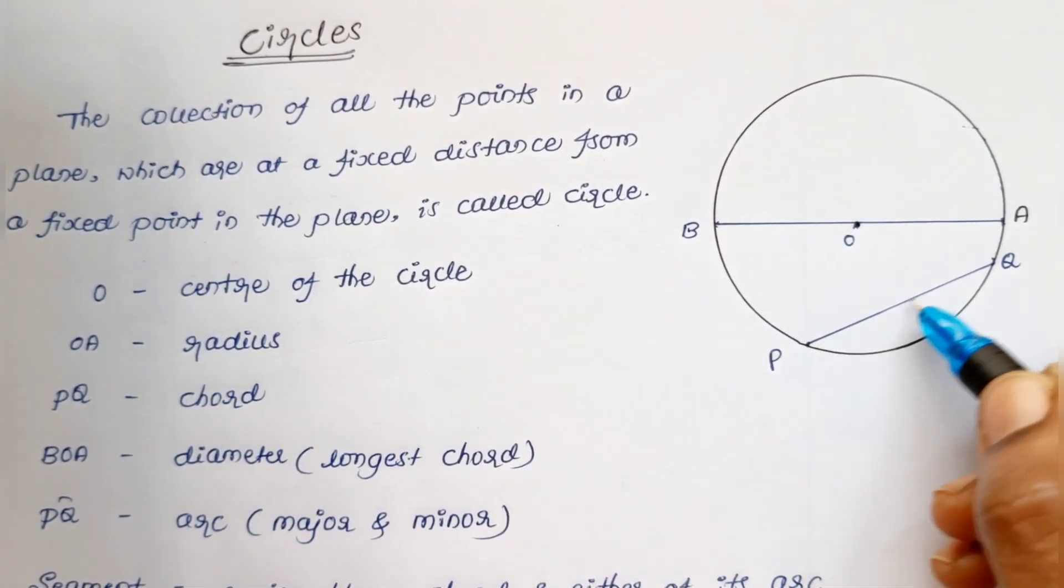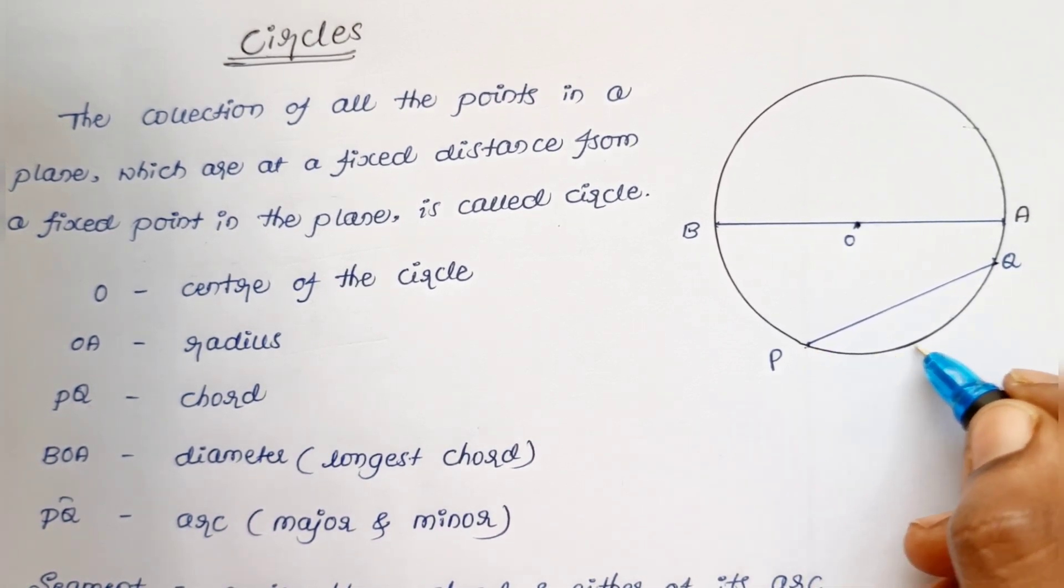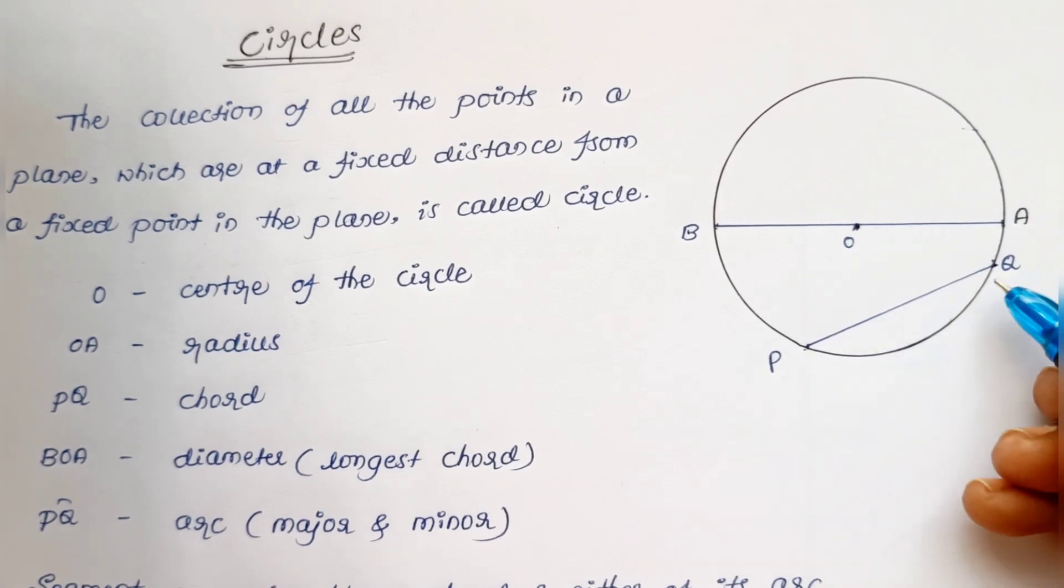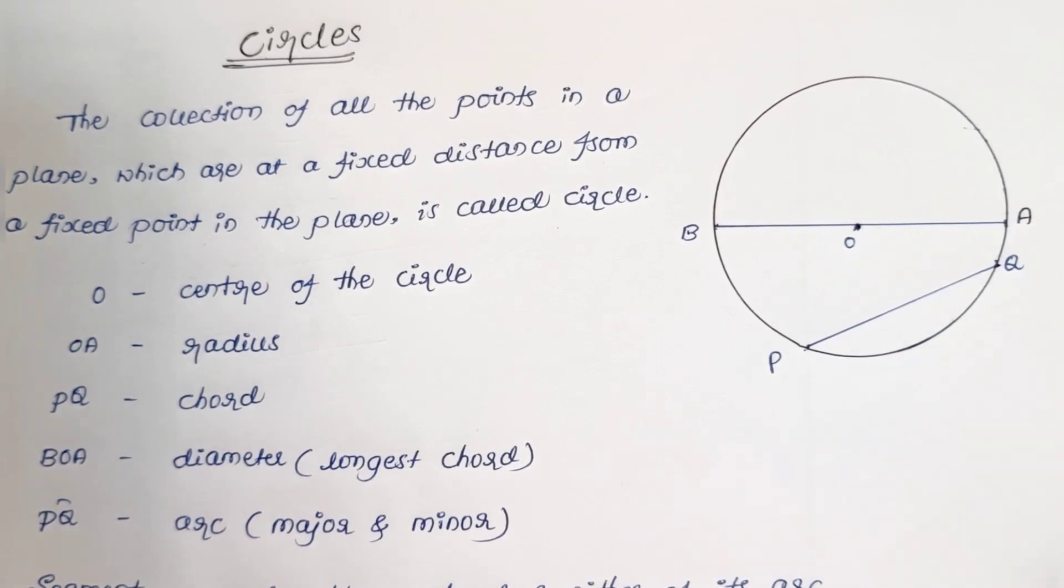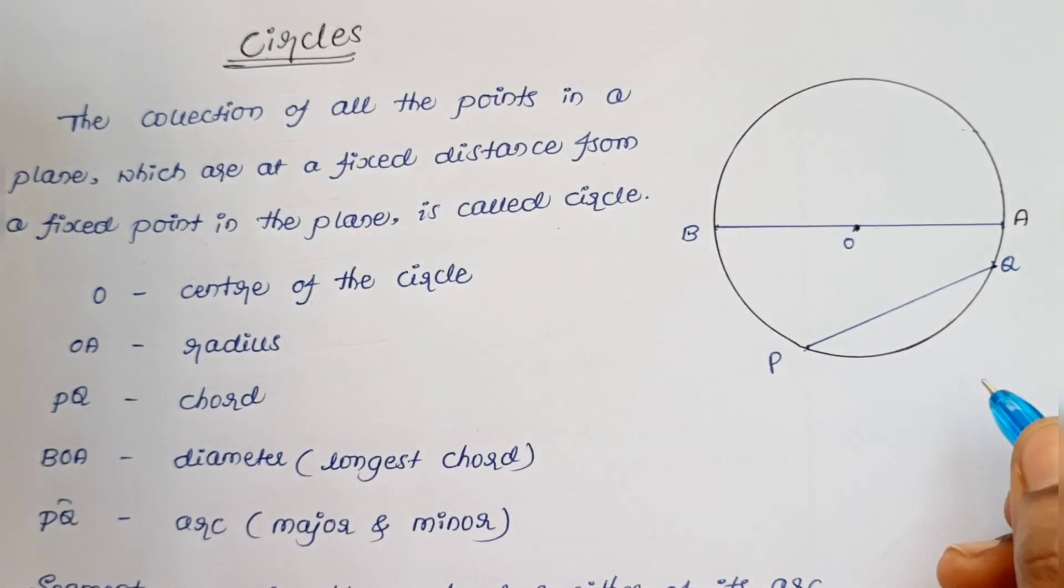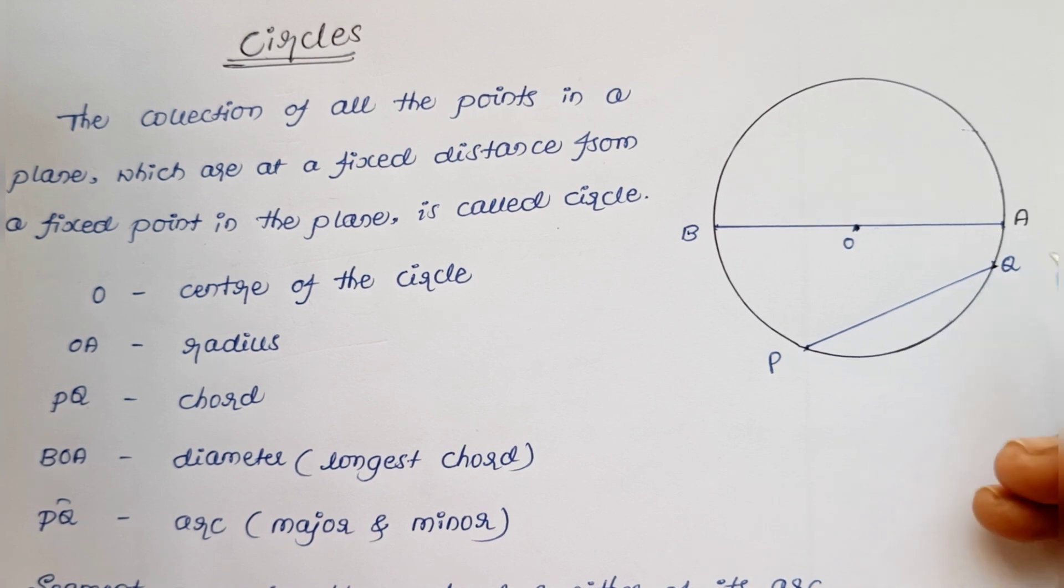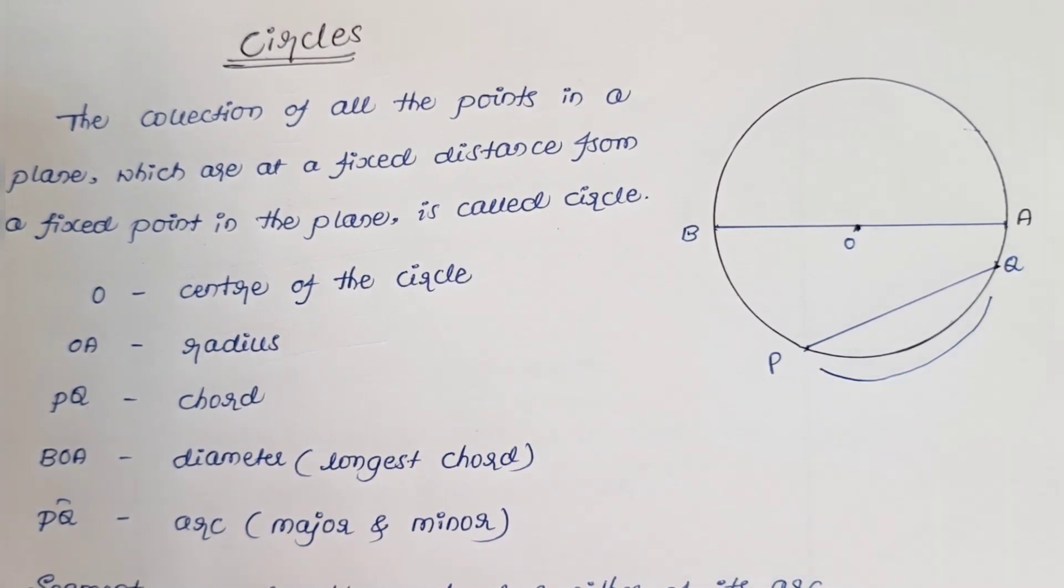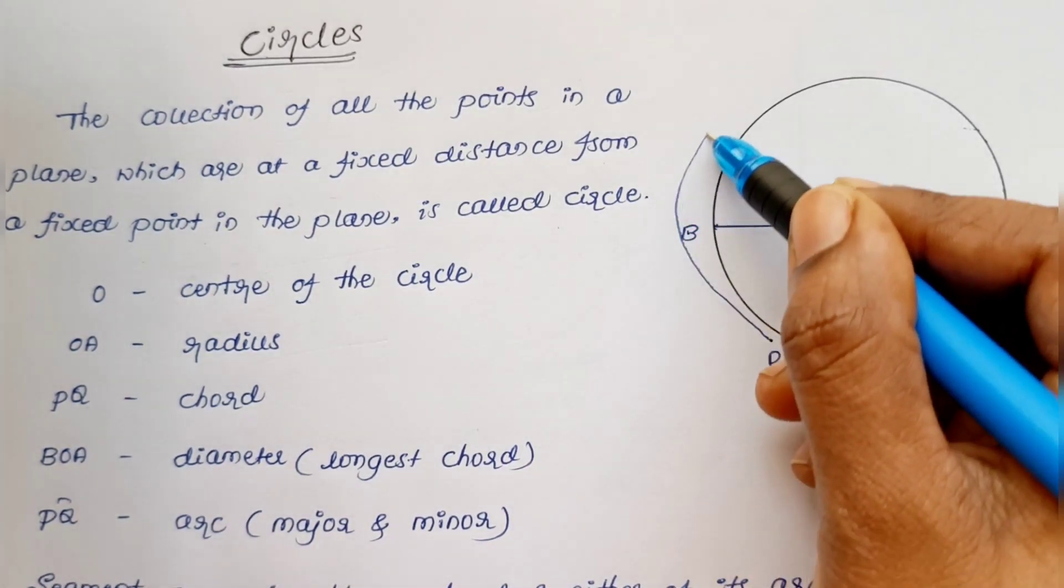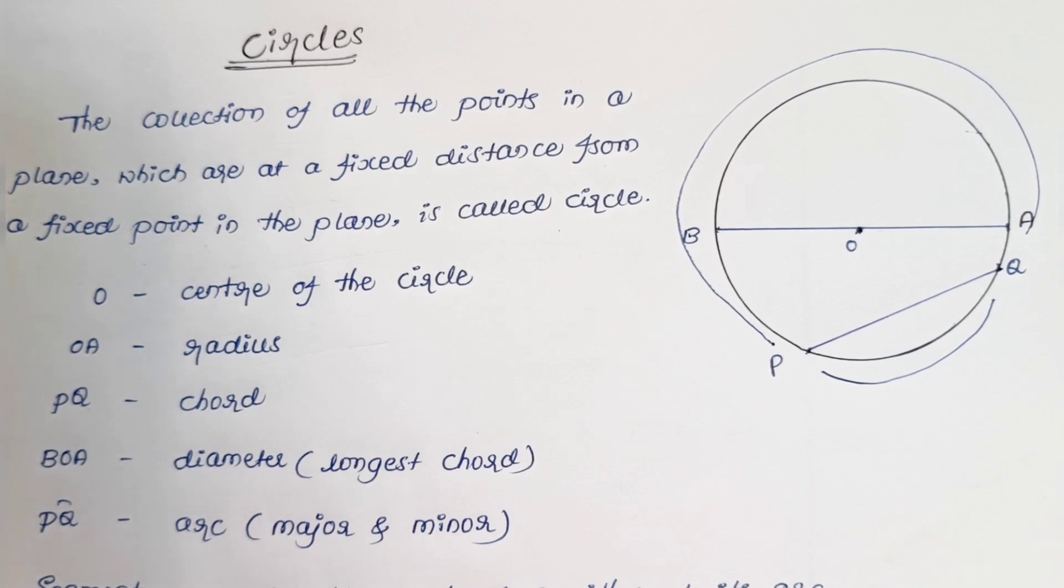Here PQ is a curved line. The curved part of the circle is called an arc. An arc can be a minor arc or a major arc. Here PQ line segment is the smaller one, so it is called the minor arc, and here it is the major arc.